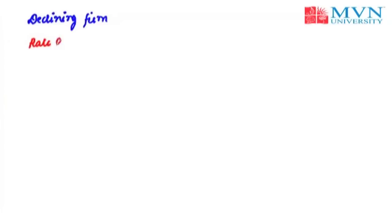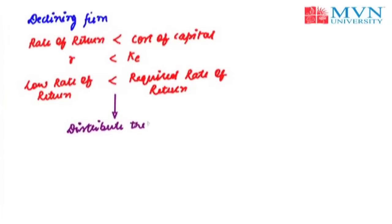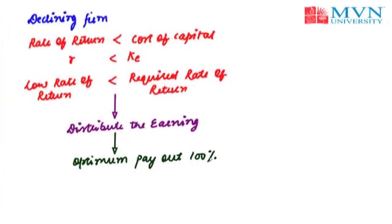However, in the case of a declining firm, these kinds of firms do not have profitable investments. That is, the rate of return R is less than the cost of capital Ke, or you can say these firms have a lower rate of return than the required rate of return by investors. So if a firm is a declining firm, it should distribute its earnings. For such firms, the optimum payout ratio would be 100%, and they should distribute all of their earnings as dividends. Since declining firms do not have investment opportunities available, they should distribute all their profits as dividends to their investors.